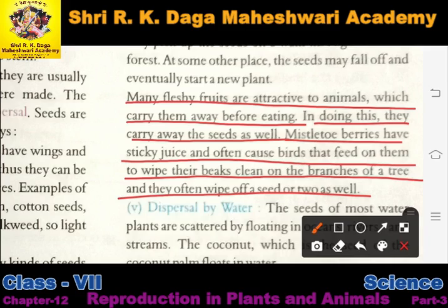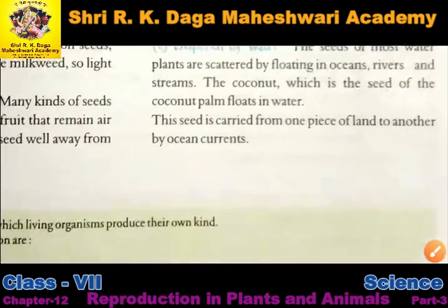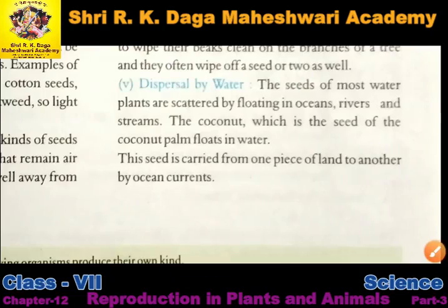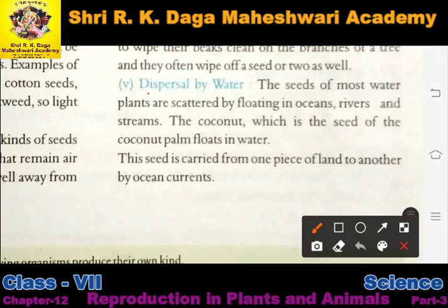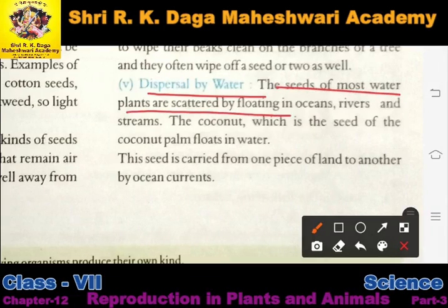Is tarike se jo seeds hain unka dispersal hota hai with the help of birds. Now one more method of dispersal is by water. The seeds of most water plants are scattered by floating in oceans, rivers, and streams.